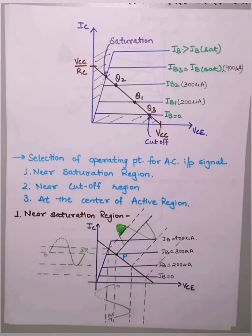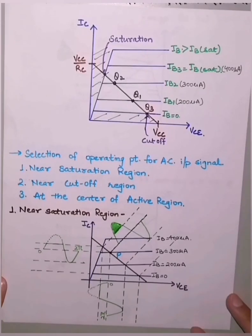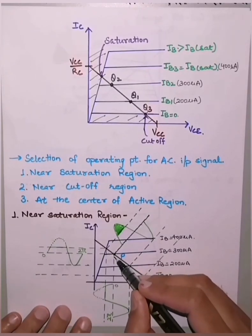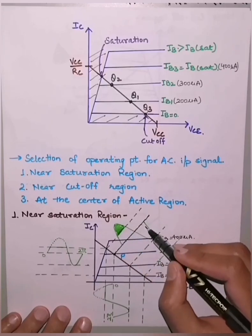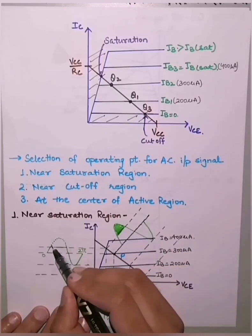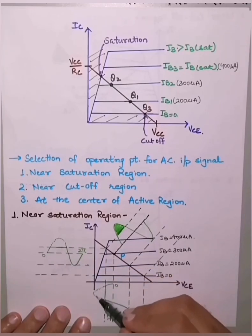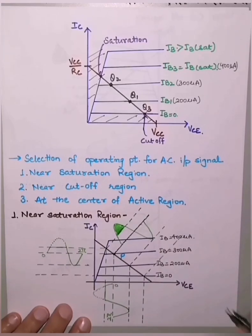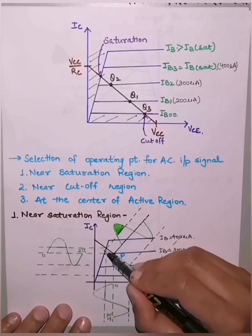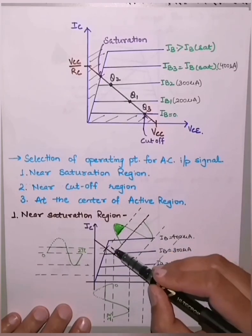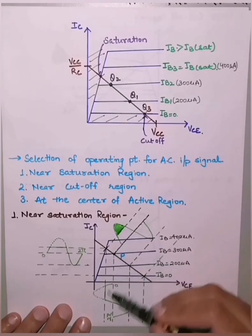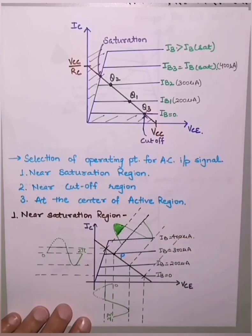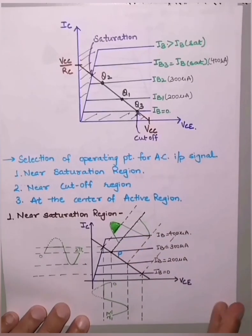If the Q point is chosen near the saturation region and an AC input signal is applied for amplification, we find that the positive peak of the output is clipped. This happens because the upper limit of the active region is reached — any signal above that limit is not reproduced at the output in amplified form. Only signals within the active region boundaries are available at the output.